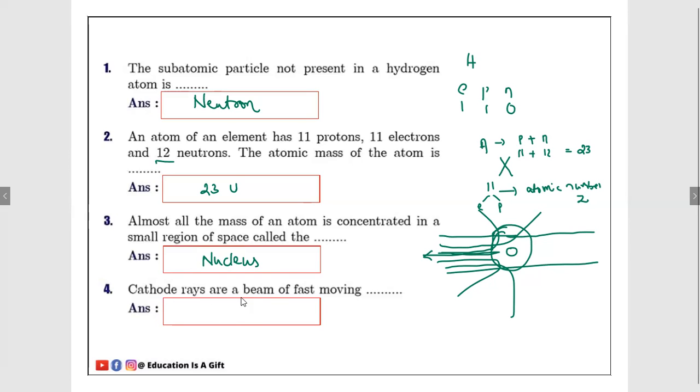Number four: Cathode rays are a beam of fast moving... If you see cathode ray discharge tube experiment, there will be two terminals, first one negative, this one positive. If connected between high voltage, you can observe from the negative terminal green color light which will emerge and pass through the positive terminal. This ray is known as cathode rays, and cathode rays are a beam of fast moving electrons.